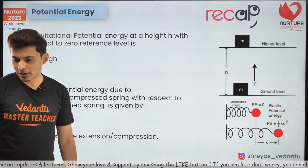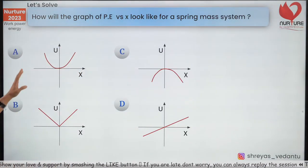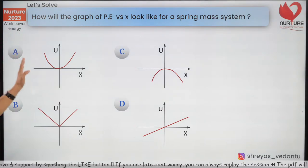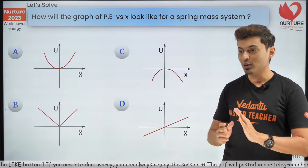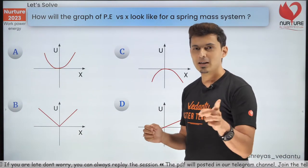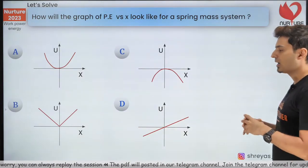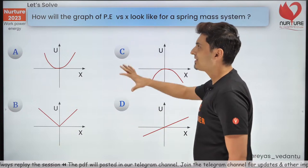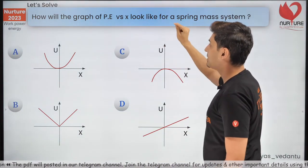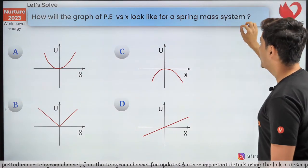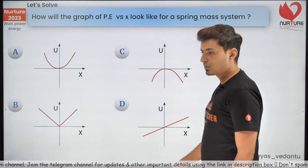Today's entire session is about potential energy graphs — you will also see maxima and minima, and we are going to talk about equilibrium. But before that, let's see if you can figure out how the graph of potential energy versus displacement X looks for a spring-mass system. Is it A, B, C, or D?